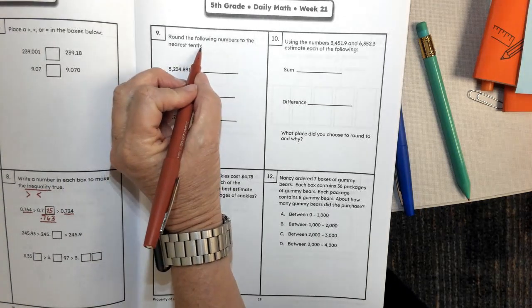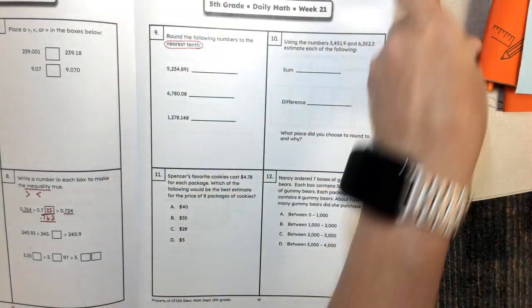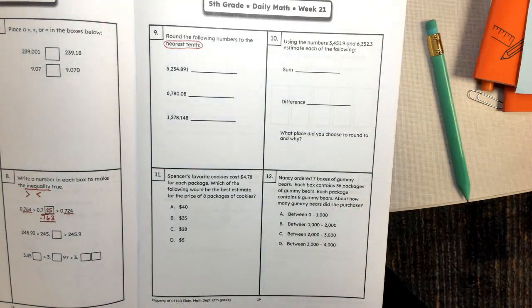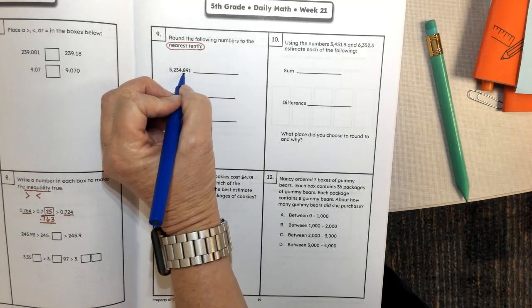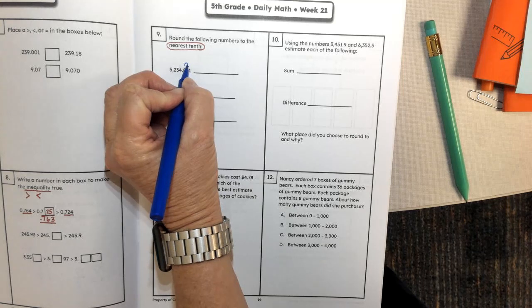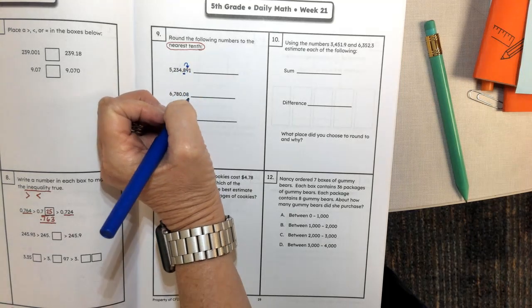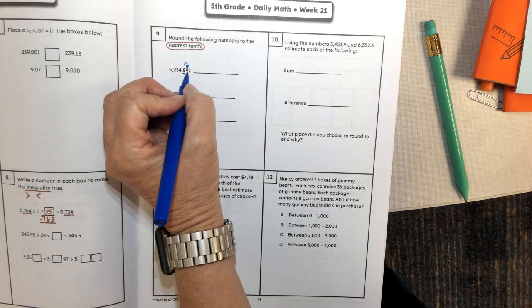I'm going to circle what we're rounding to - we're rounding to the nearest tenth. That means that I need to underline the digit in the tenths place. When I underline the digit in the tenths place, I always go to the number to the right. Remember they have the right information, and that number is a nine.